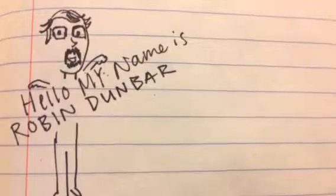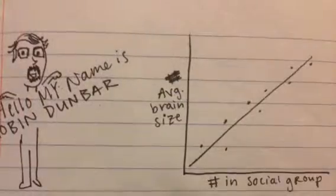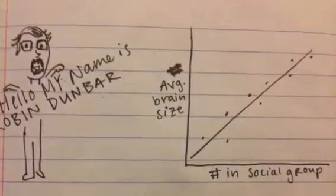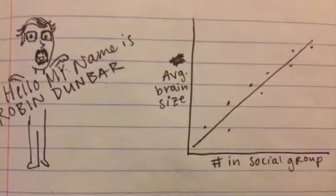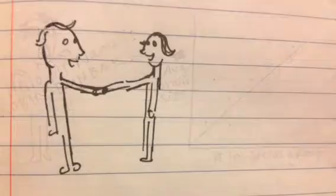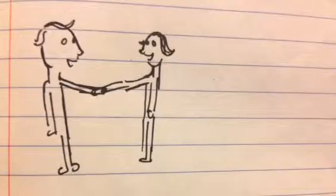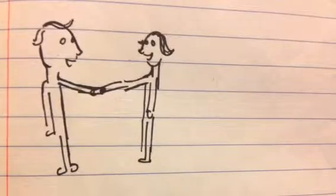The primary line of statistical evidence that Dunbar cites is that as the average social group size increases, so does the average size of the brain of individuals. What Dunbar takes this to suggest is that as a social group size of a species increases, the neocortex has to increase to accommodate for all the social interaction that's going on there.